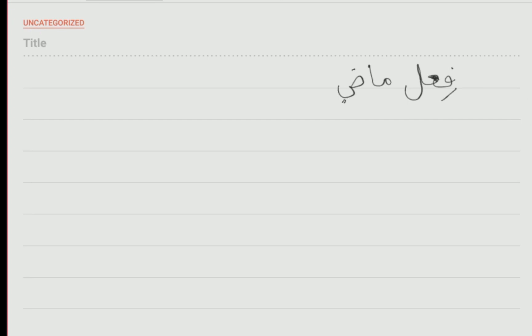You know that there's something called fi'lun madi, the past tense verb. And you should know there's something called fi'lun mudari. Al-fi'lun madi is the past tense verb — the verb that refers to an action that took place in the past. The fi'lun mudari is for the present or future tense.